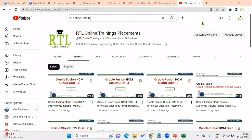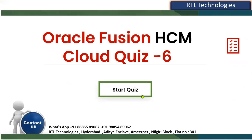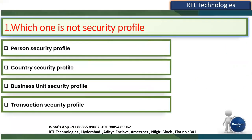Hi, welcome to our RTL online trainings and placements. Now we are going to talk about Global HR Quiz 6. The first question is: we have security profiles — which one is NOT a security profile from the below four options?